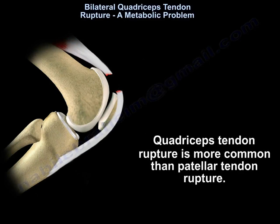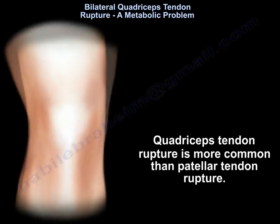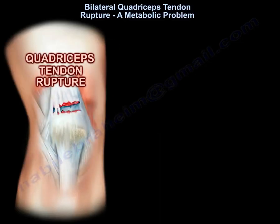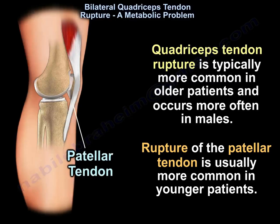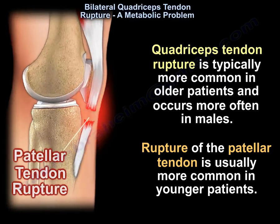Quadriceps tendon rupture is more common than patellar tendon rupture. Quadriceps tendon rupture is typically more common in older patients and occurs more often in males. Rupture of the patellar tendon is usually more common in younger patients.